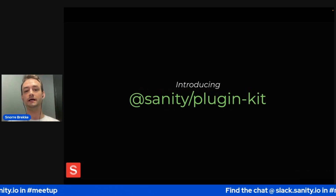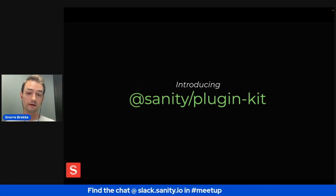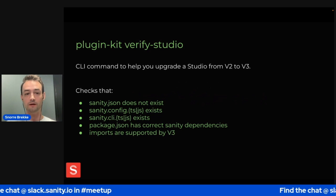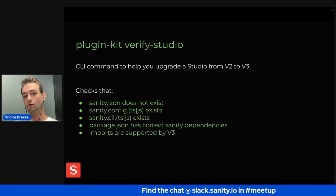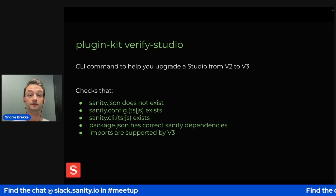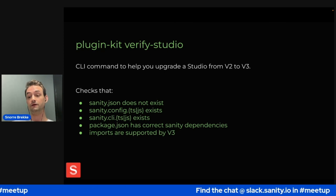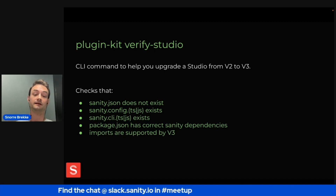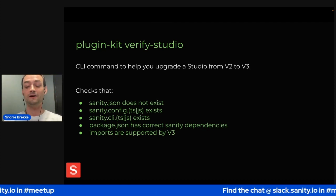We're introducing a new package: Sanity Plugin Kit. It's a series of command line interface commands that will help you do migration. All of these can be considered a dev preview, and we're really looking for feedback on them. The idea is that you can use these in a v2 studio or a v2 plugin and get a set of helpers or outputs that will tell you what you need to do to get on your way.